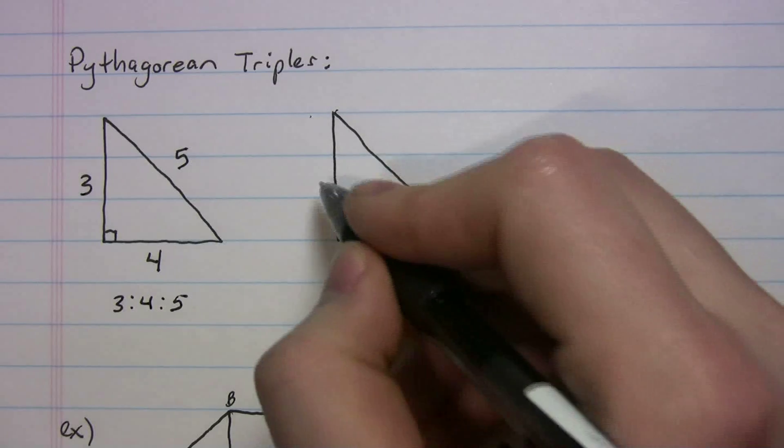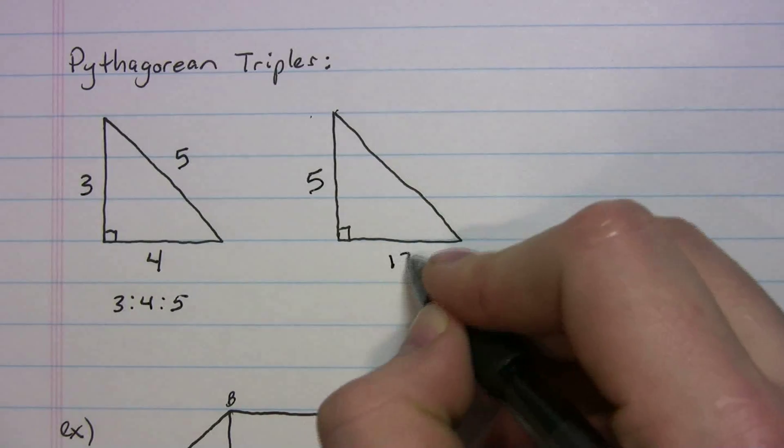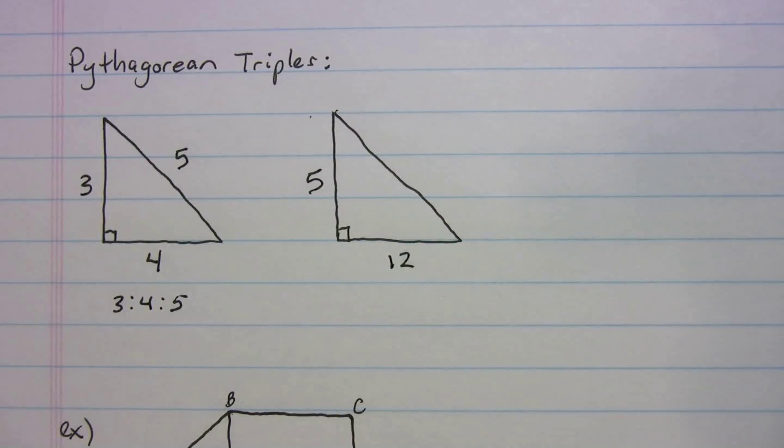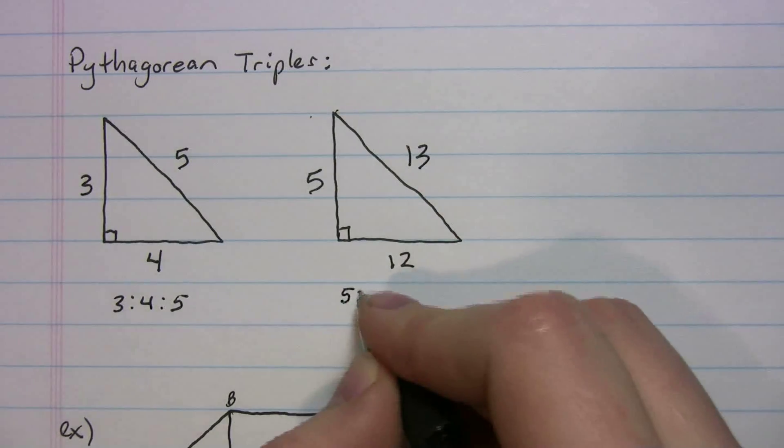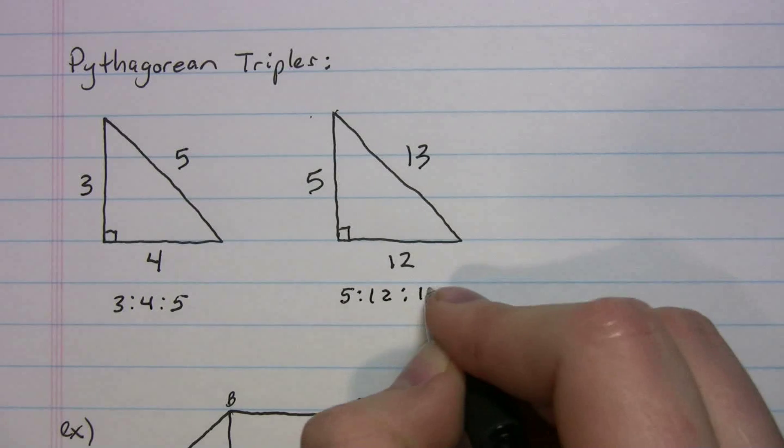The other one that you should be aware of is the 5-12. When you have legs of five and 12, this has to be 13. So that is the 5-12-13.